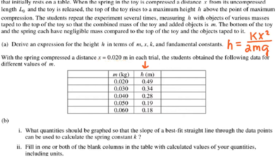So every single time x is the same compression and the masses are different. For part b: what quantities should be graphed so that the slope of the best fit straight line through the data points can be used to calculate the spring constant? So I need to find the spring constant, so the slope probably has to have some kind of relationship to the spring constant. If I use the equation found for h, I need to rewrite it so I can obtain the graph.